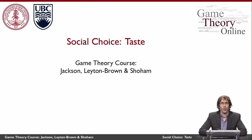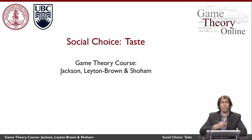Welcome to our advanced course on game theory. This course covers the topics of social choice, mechanism design, and auctions. Essentially, it asks the question: if I know that agents are going to behave game theoretically, how can I design interactions for them that lead to good social outcomes?